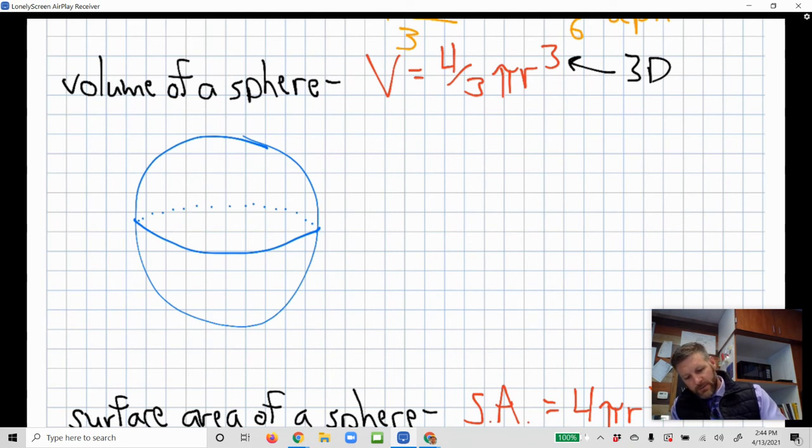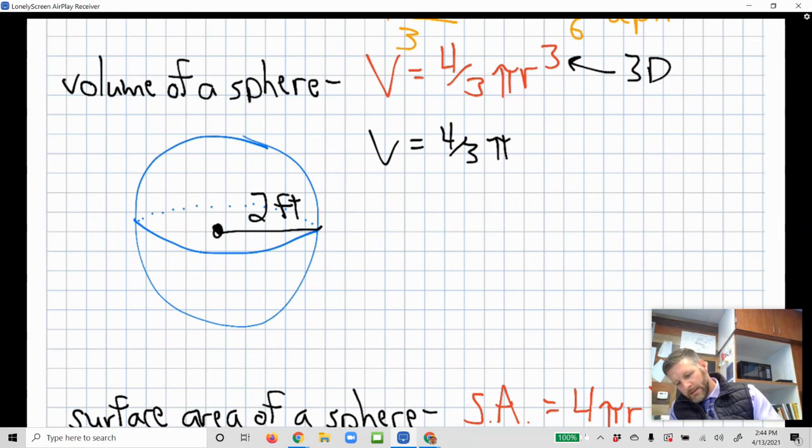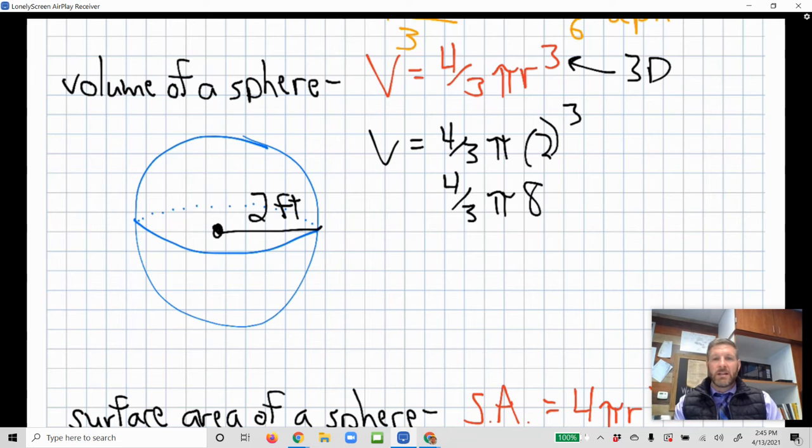So if we had our nice little sphere here, and I just imagine I've got myself a radius. Say my radius is two. We'll go ahead and say two feet. We can just plug that in for our radius. Volume equals four-thirds pi times two cubed. And we just solve from there. Two cubed is eight. So four-thirds pi eight. Then we multiply eight times four-thirds. Four times eight is 32. 32 over three times pi, or 32 pi over three was what that would simplify to.